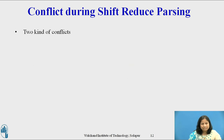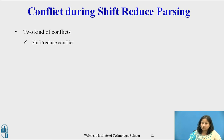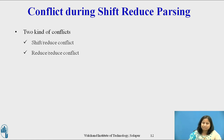There are context-free grammars for which shift-reduce parsing cannot be used. There are two conflicts in such grammars. Knowing the entire stack content and the next input symbol, the parser cannot decide whether to shift or to reduce — i.e., a shift-reduce conflict — or the parser cannot decide which of several reductions to make — i.e., a reduce-reduce conflict.